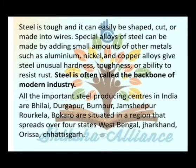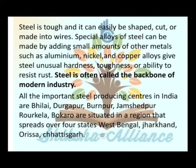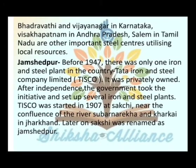Special alloys of steel are called the backbone of modern industries. All the important steel-producing centers in India are Bhilai, Durgapur, Burnpur, Jamshedpur, Rourkela, and Bokaro, situated in a region that spreads over four states: West Bengal, Jharkhand, Odisha, and Chhattisgarh. Bhadravati and Vijayanagar in Karnataka and Visakhapatnam in Andhra Pradesh and Salem in Tamil Nadu are also important steel centers utilizing local resources.